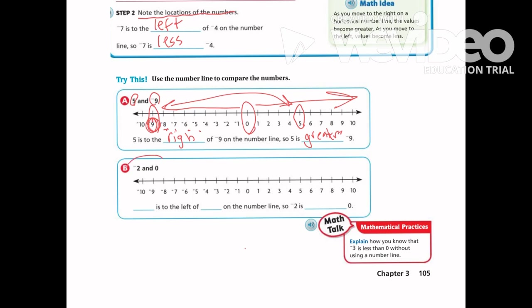Let's compare negative 2 and 0. Here's my negative 2 and here's my 0. Negative 2 is to the left of 0 on the number line, so negative 2 is going to be less than 0.